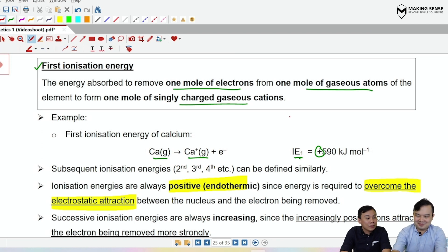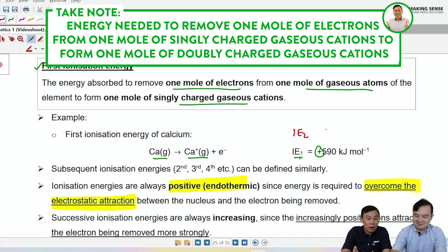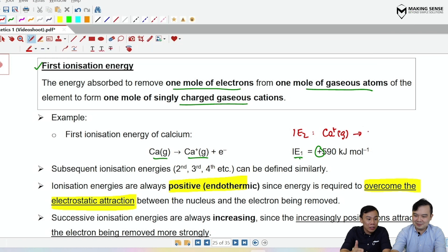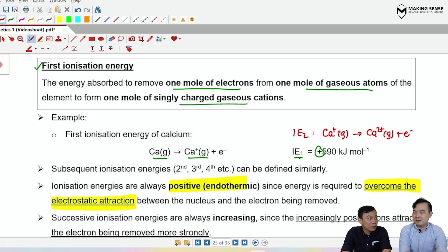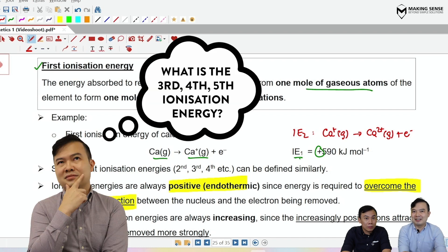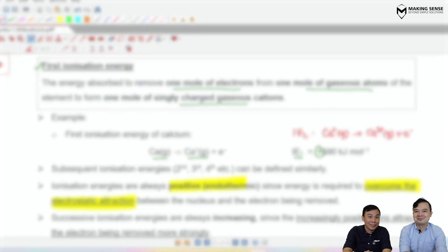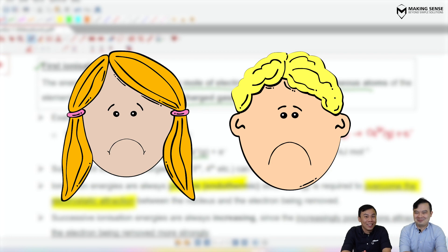The second ionization energy is the energy needed to remove one mole of electrons from one mole of singly charged gaseous cations to form one mole of doubly charged gaseous cations: Ca⁺(g) → Ca²⁺(g) + e⁻. Third, fourth, and fifth ionization energies follow the same pattern — students are expected to define these in class.